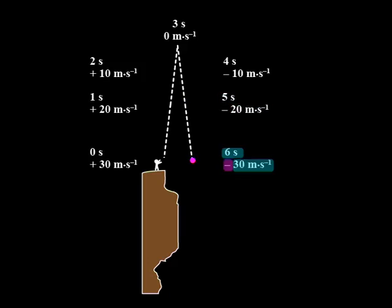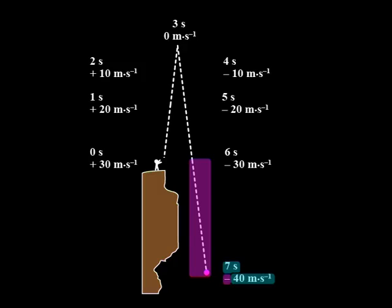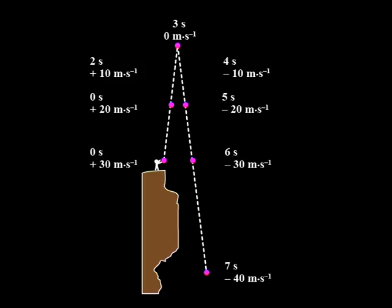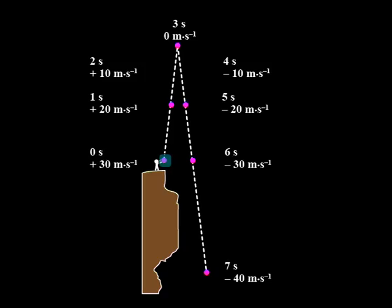By the end of second six its velocity is negative 30 meters per second. Notice that now the ball is at the same height as it had left the hand. Now the ball falls below the hand's height, still accelerating at 10 meters per second each second, so at the end of second seven its velocity is negative 40 meters per second. There are many interesting patterns in this data — can you see them?